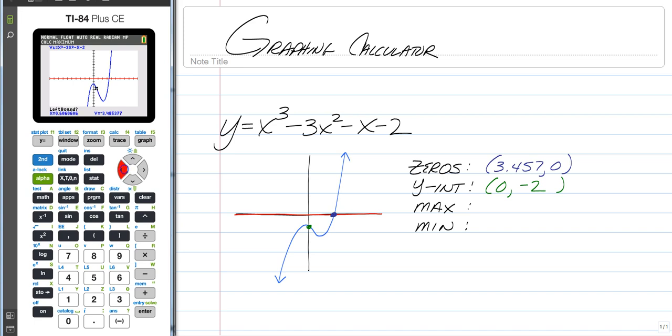So left bound means to take your little spider or your little blinky whatever you want to call it and you go to the left side of your maximum. So if your max is right there you go to the left a little bit. You don't have to go far.